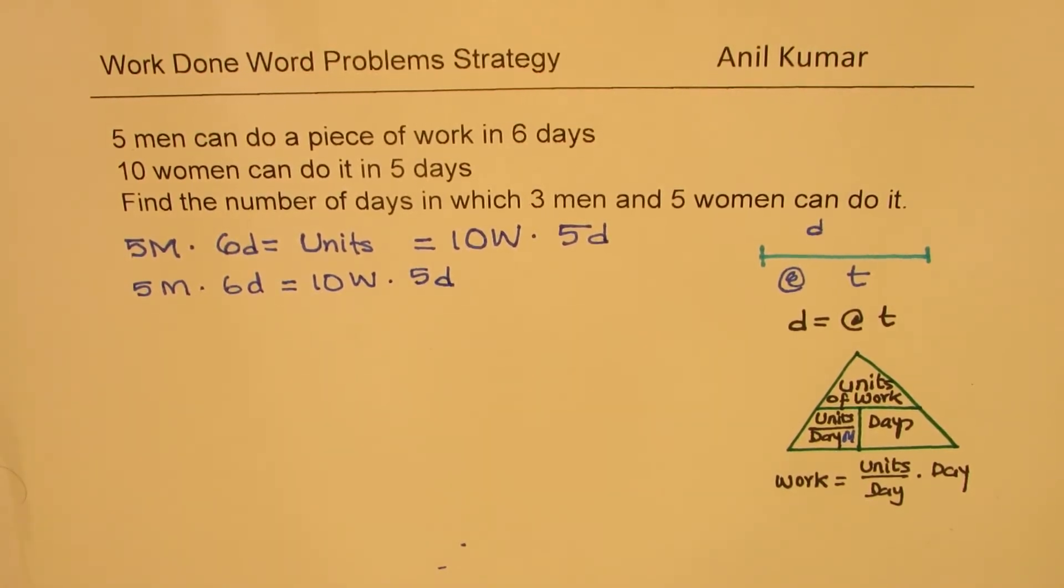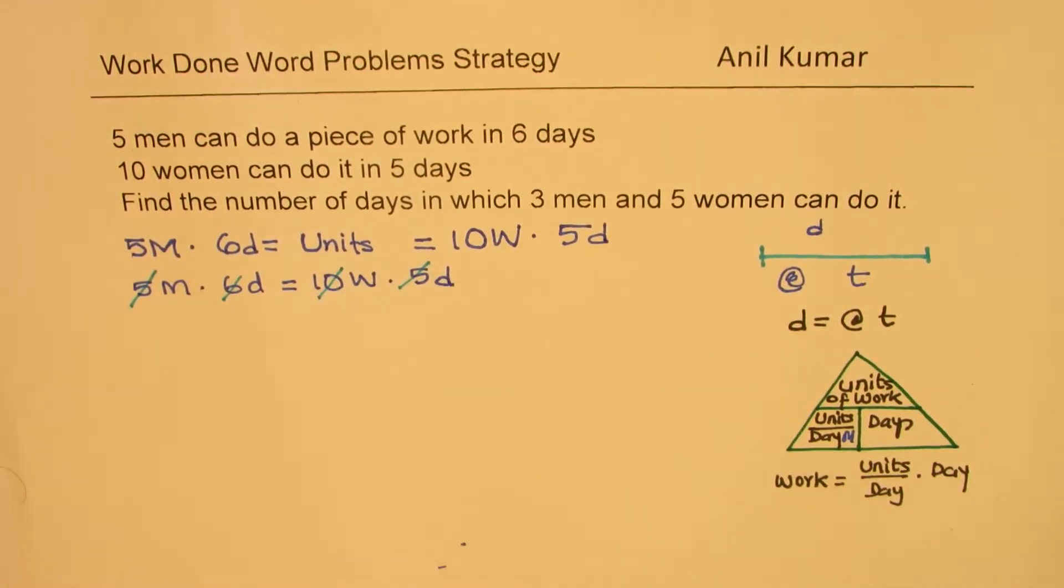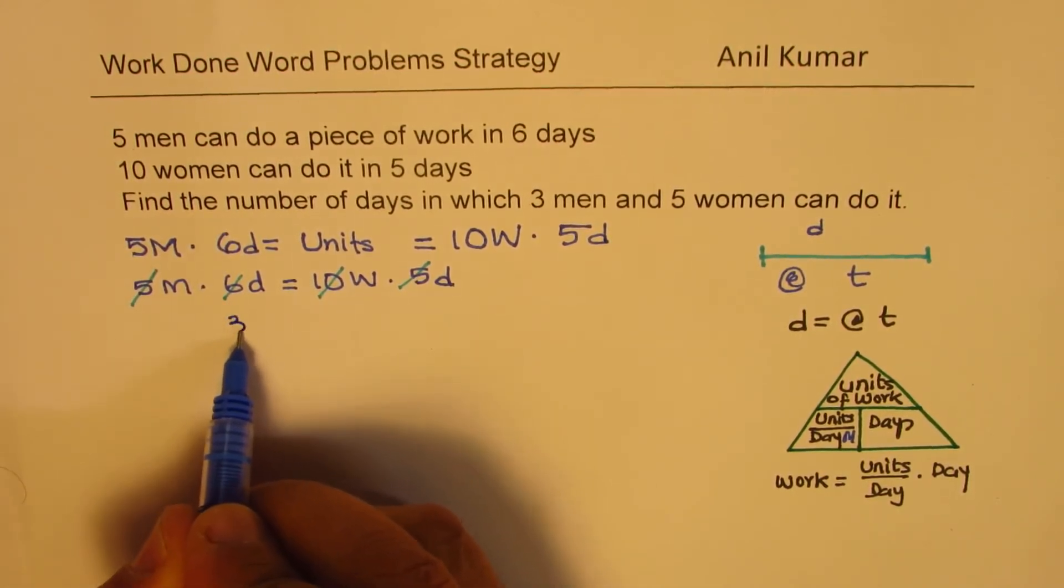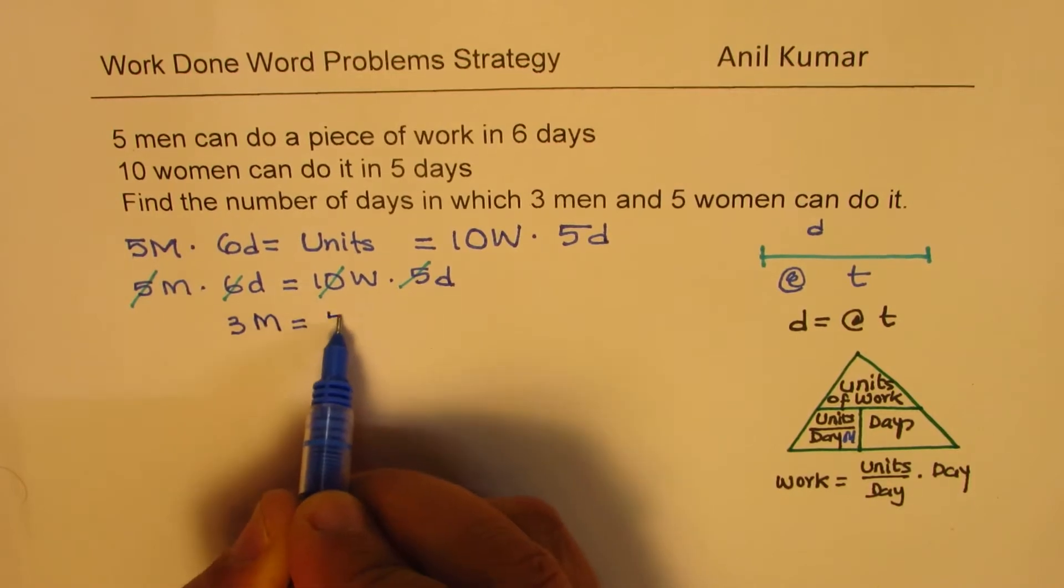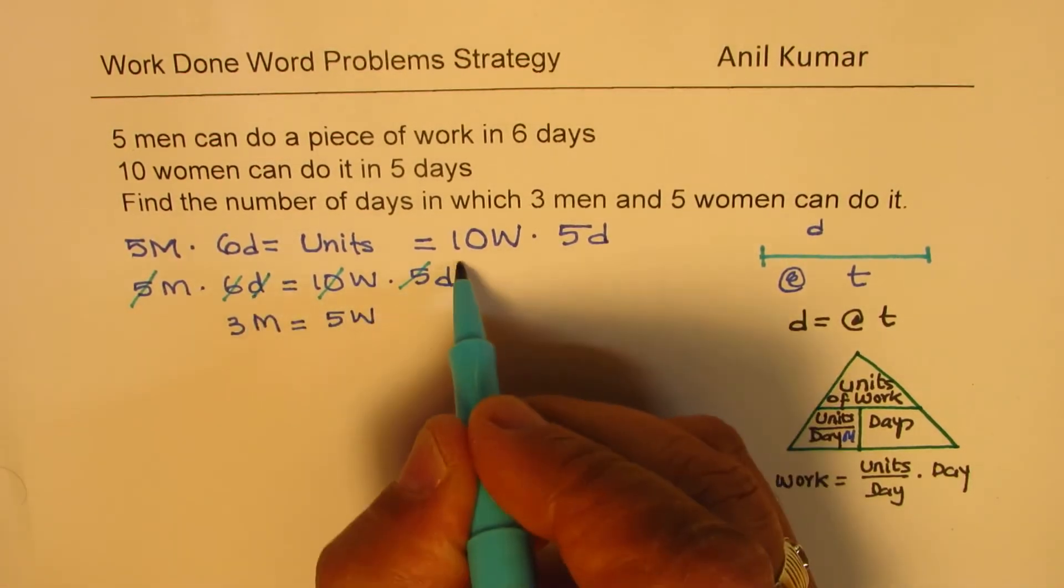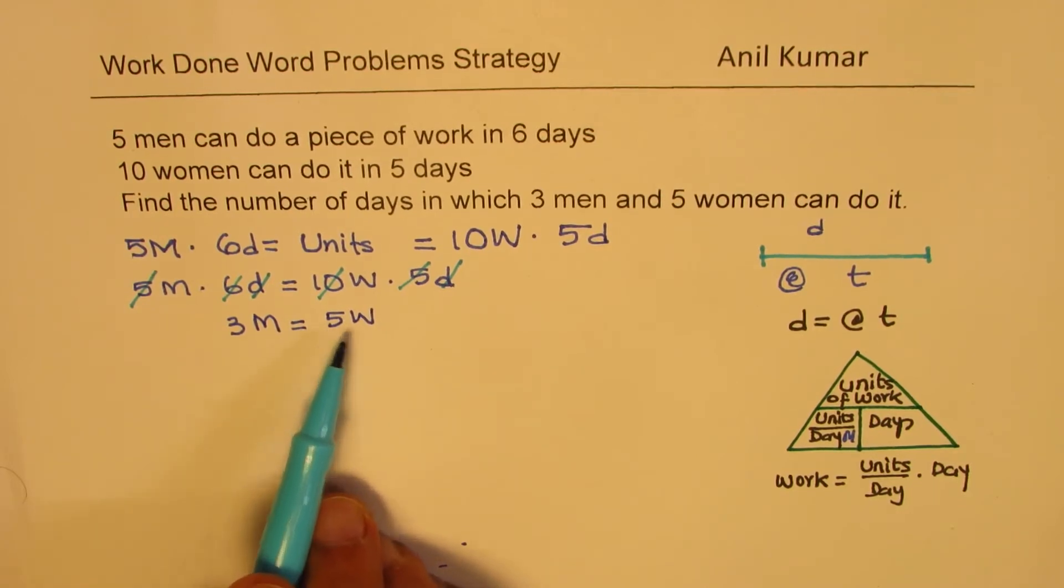Now, this could be simplified. We could always cancel a few things. When you simplify, what do you get? Dividing by two, you get three days, three men days. D and D cancel. So, you get three M is equal to five W. Days you could cancel and say the rate for three men is same as that of five women. So, the amount of work which three men can do is same as what five women can do.